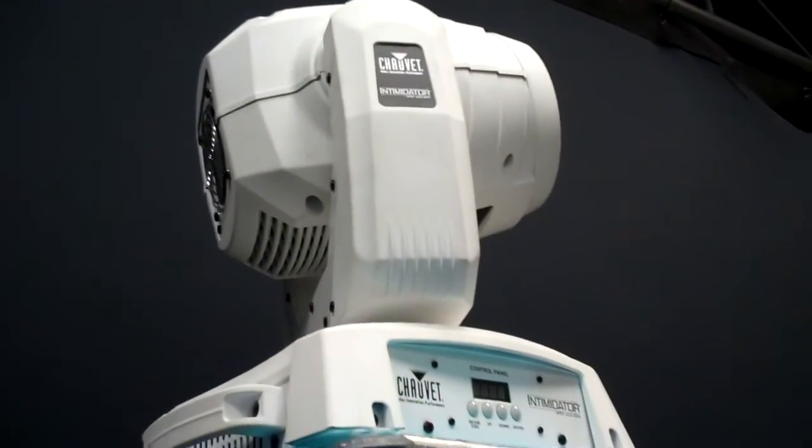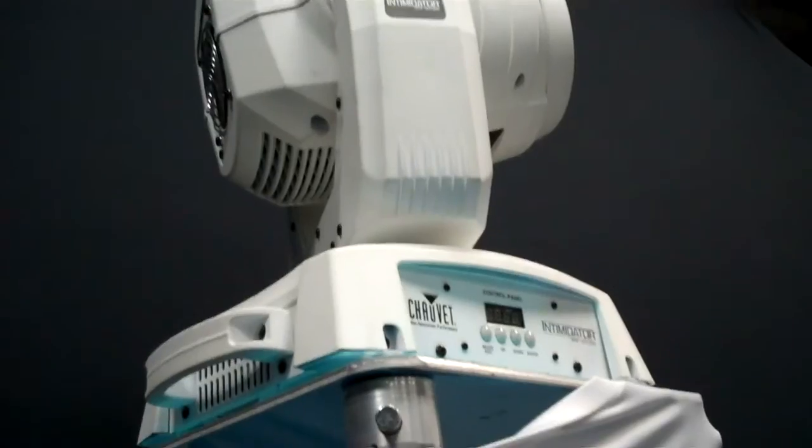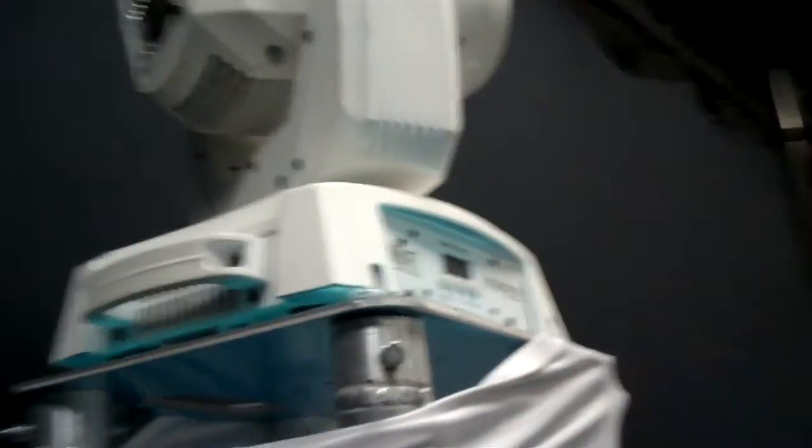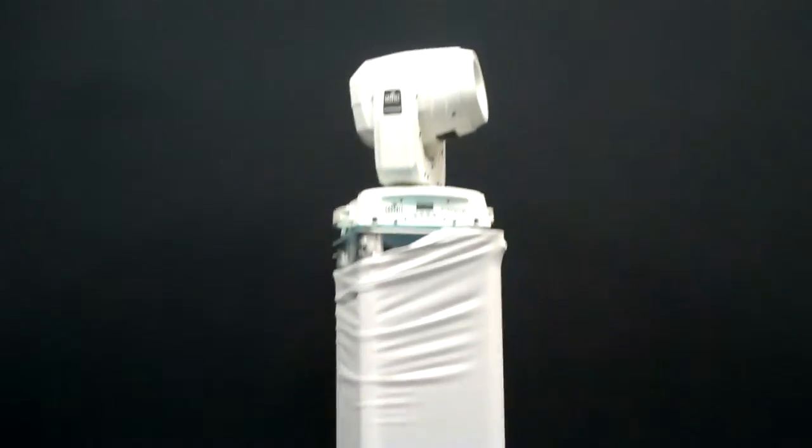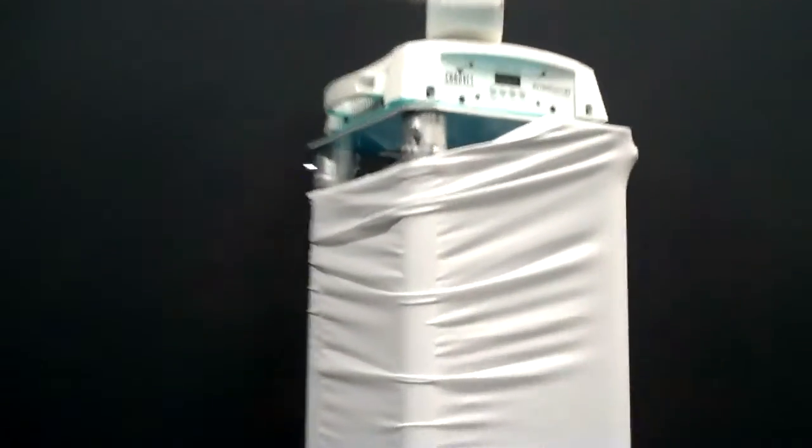One trick I want to show you, I've got my Intimidator Spot LED 350. And again, why do I have the white? Because my scrim is white and it looks like it's all one clean plate, one clean piece, it looks great. But what I want to show you is there's a handle in the back here for that top plate. What I would recommend doing is actually putting your cords through, putting your cords through that handle.